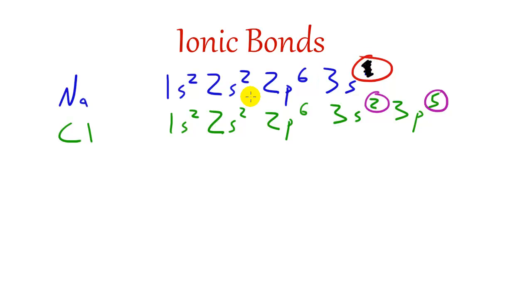If it lost this electron right here, the second energy level would then be its outermost energy level, and it is already full and completed. Now for chlorine, it would either need to gain 1 electron so the third energy level, which is the valence energy level right now, is filled up and completed, or it would need to lose these 7 right here.